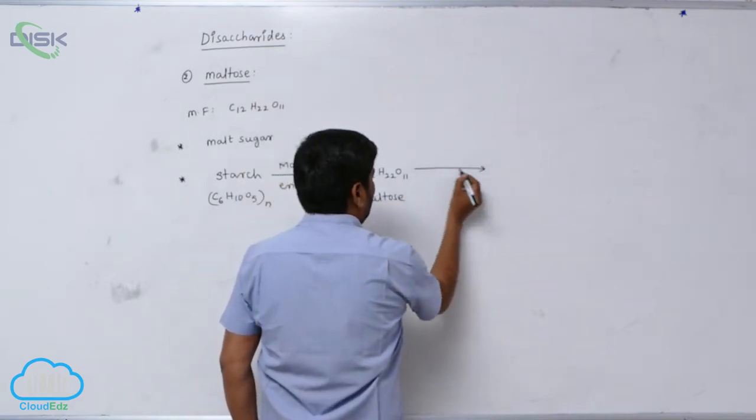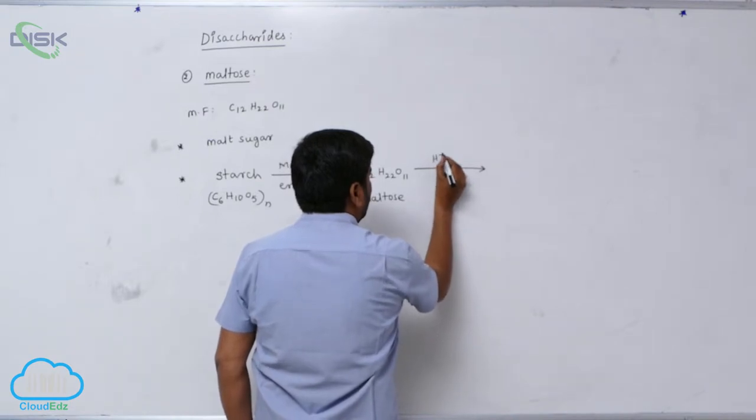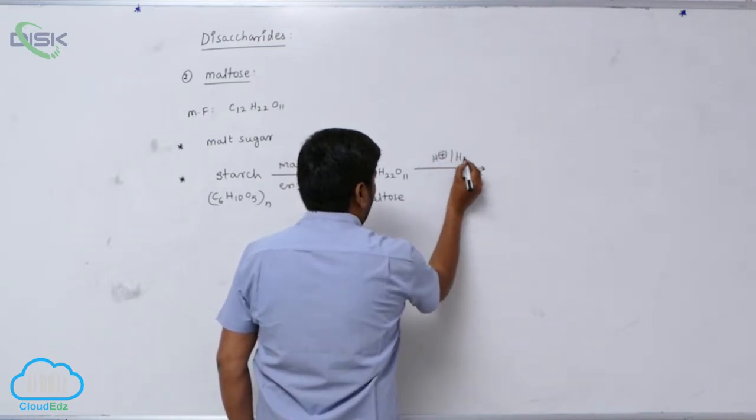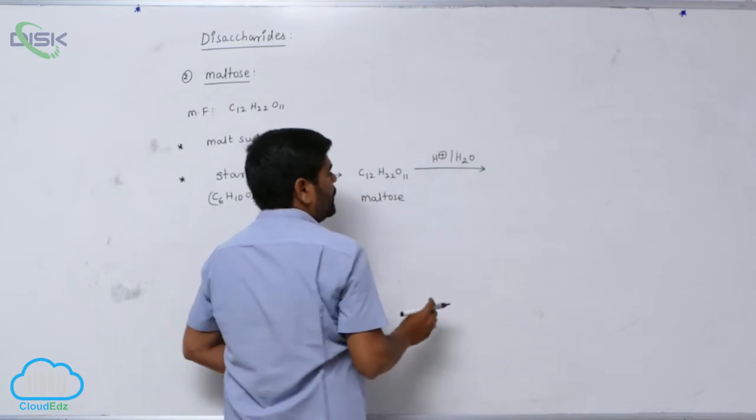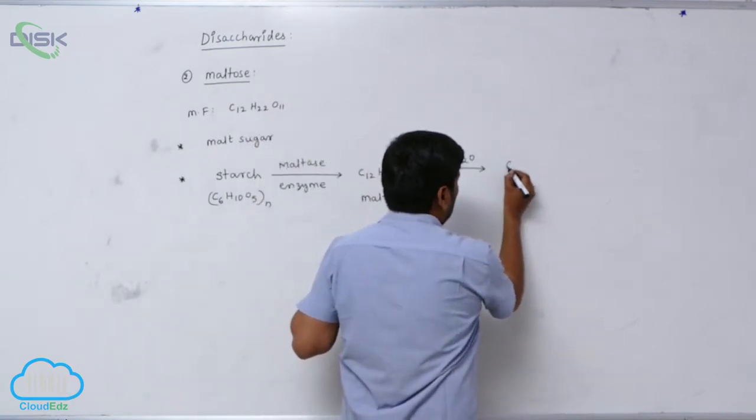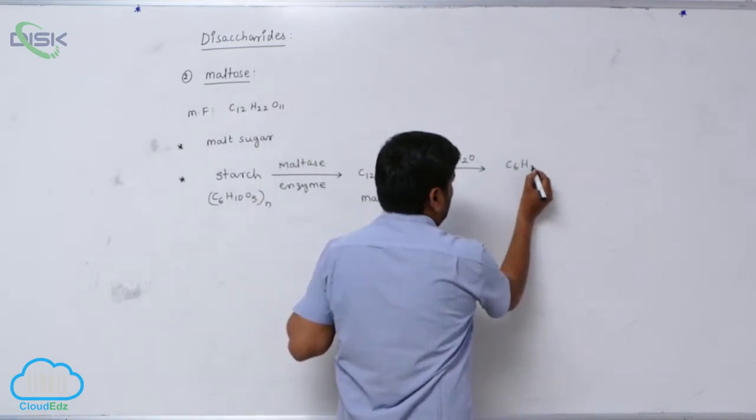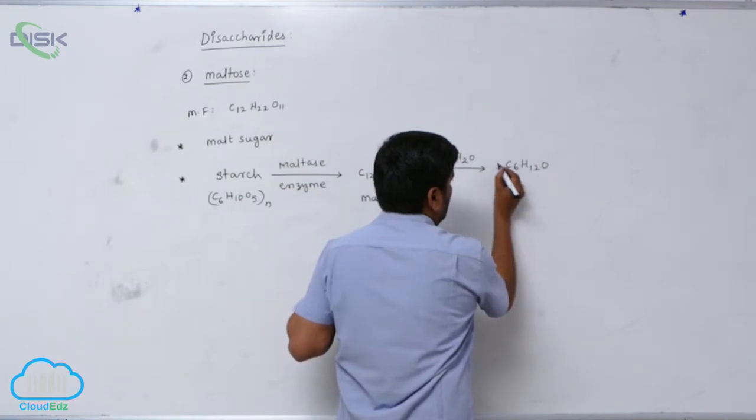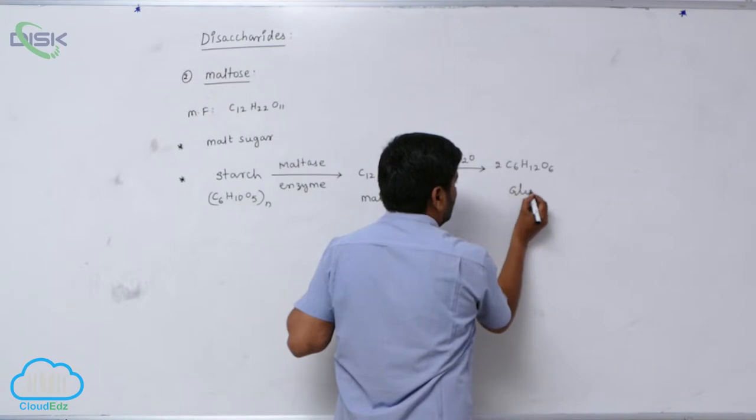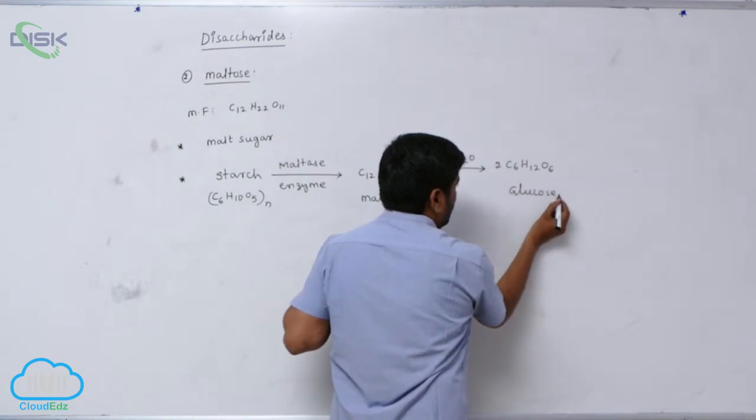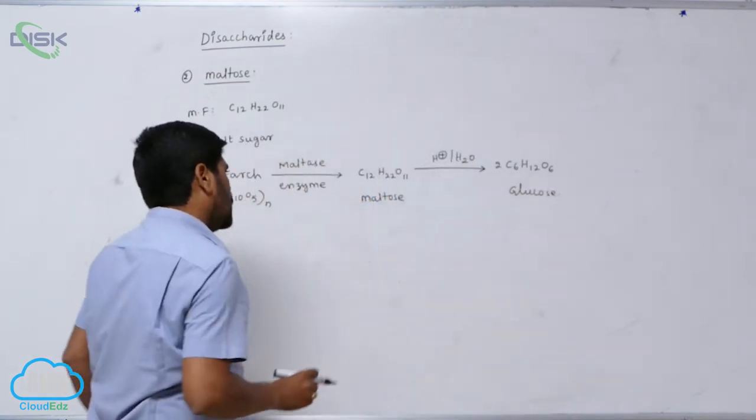This on hydrolysis gives 2 units of only glucose.